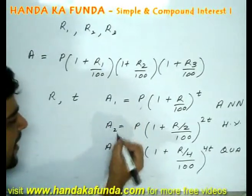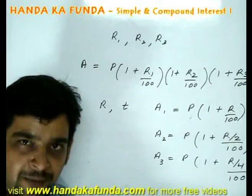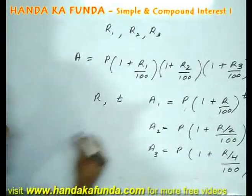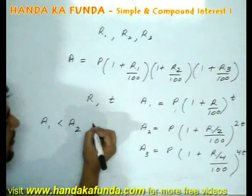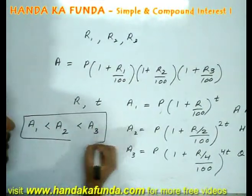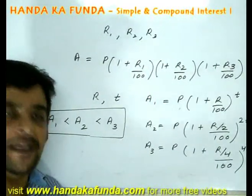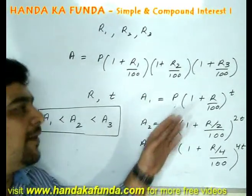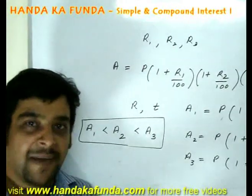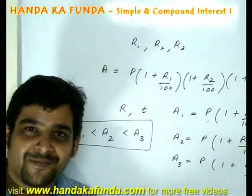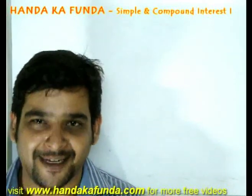Let us say the amounts are a1, a2, and a3 for annual, half-yearly, and quarterly compounding respectively. The relationship among these three will be: a1 < a2 < a3. This happens because when the interest is compounded quarterly, it gets compounded more frequently than half-yearly or annually. In this case, you are getting interest on interest, so the more frequently it gets compounded, the better it is. Stay with us for the next video on simple interest and compound interest.